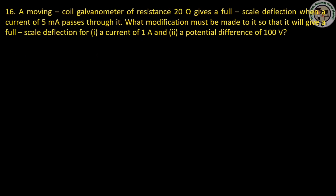The moving-coil galvanometer has a resistance of 20 ohms. When the galvanometer has a resistance of 20 ohms, the full-scale deflection current is 5 mA.